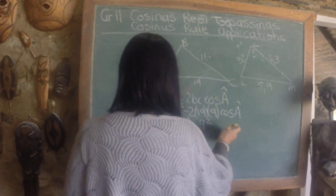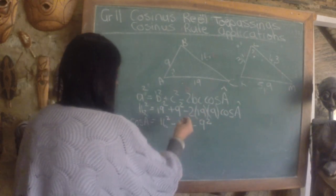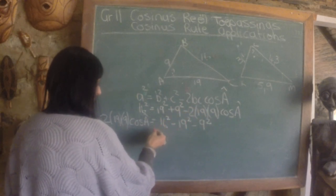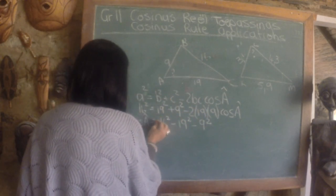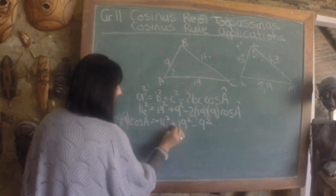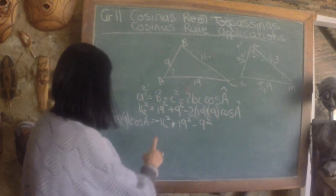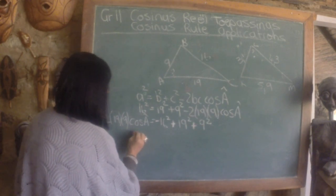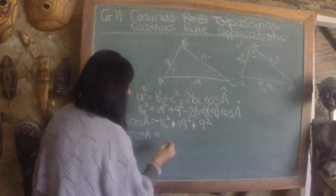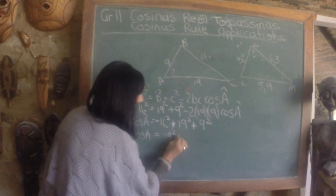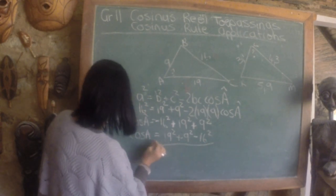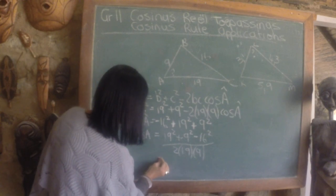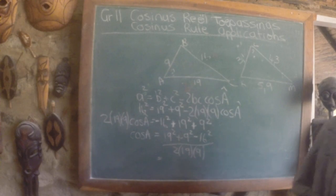If we take that to the other side of the equals it becomes positive. So you can take the 2 times 19 times 9 to this side of the equals. Then if you take this to the other side of the equals it becomes a minus, plus and a minus. In other words, if you want cos a only on one side of the equals, then you will work 19 squared plus 9 squared minus 16 squared divided by 2 by 19 by 9. And then you get your answer from cos a as 31 by 57.